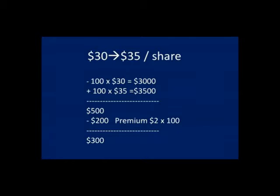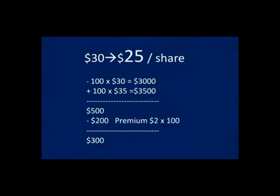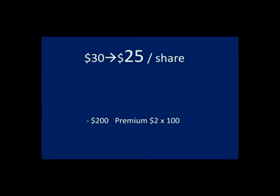But what would happen if the price instead went down to $25 per share? In this case, there would be no point for John to use the option contract to buy the shares for $30. He would then let the contract expire. The only money he would lose would be the premium — the contract — in this case $200.